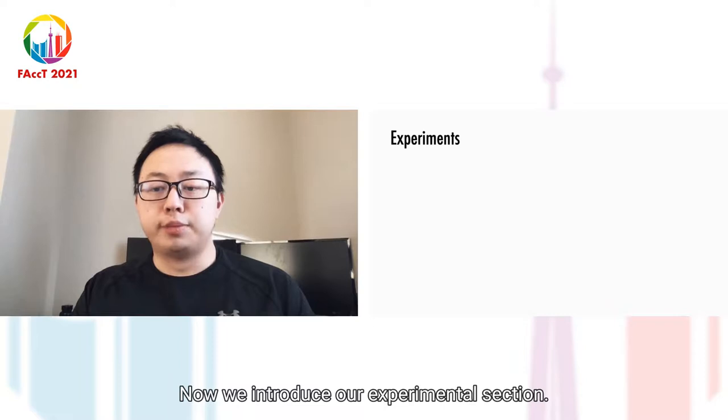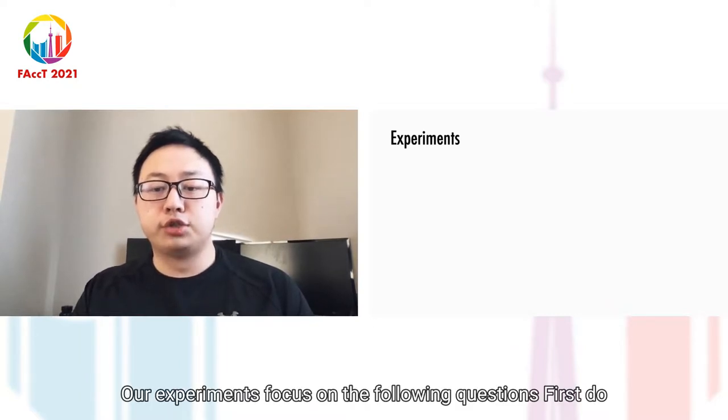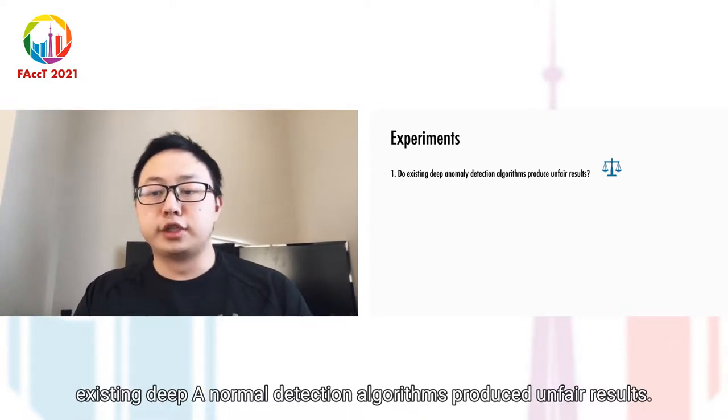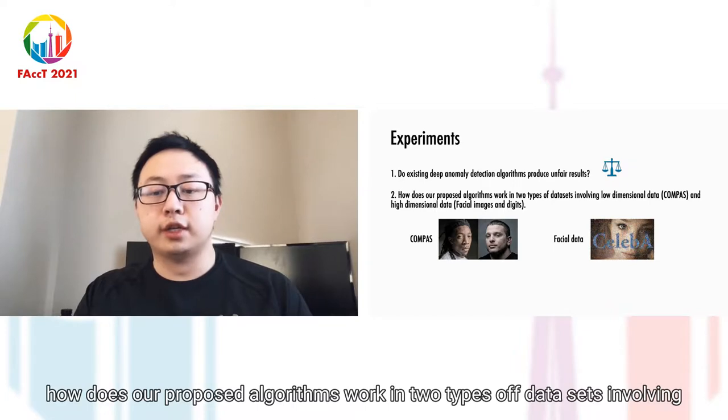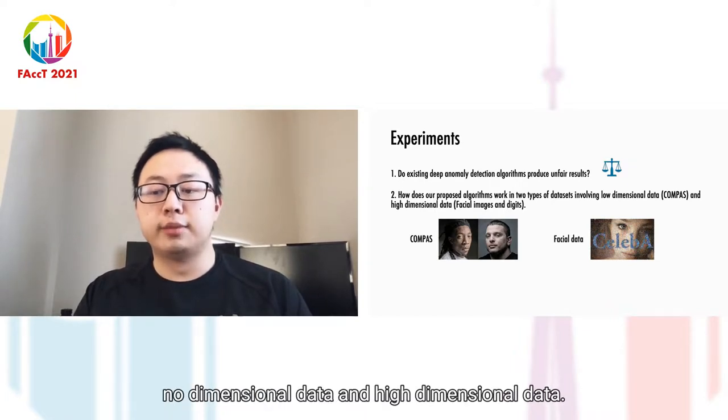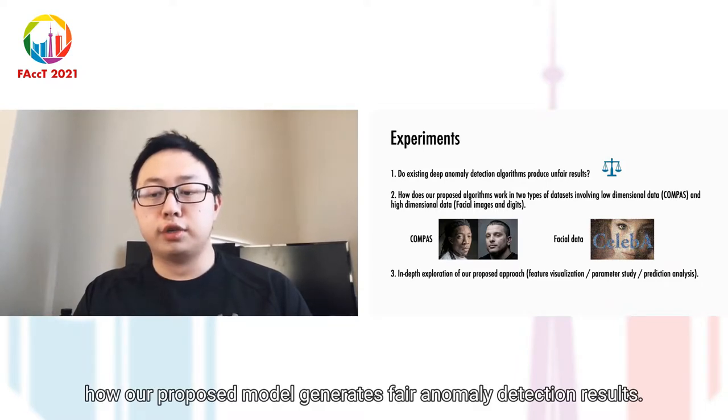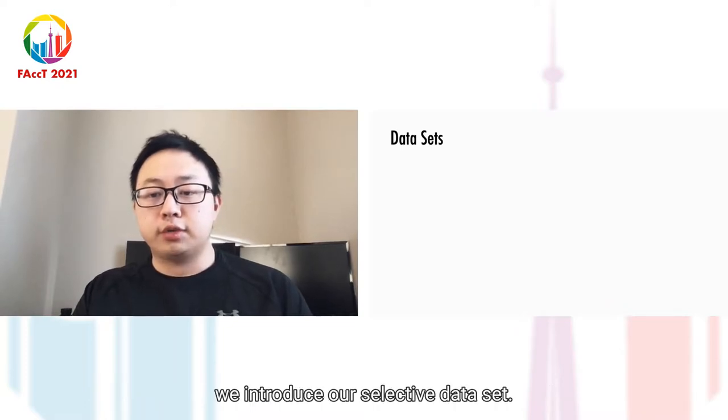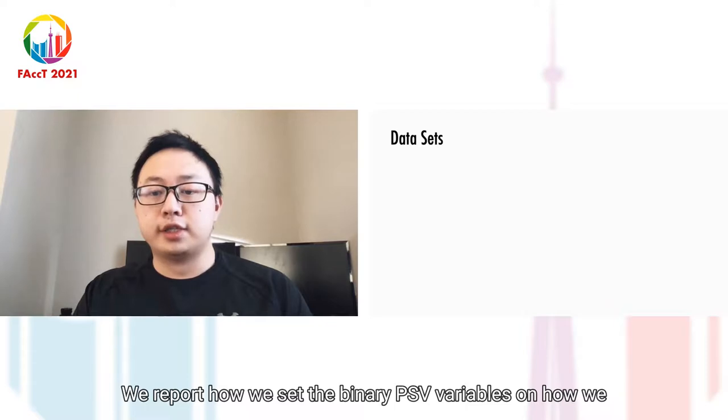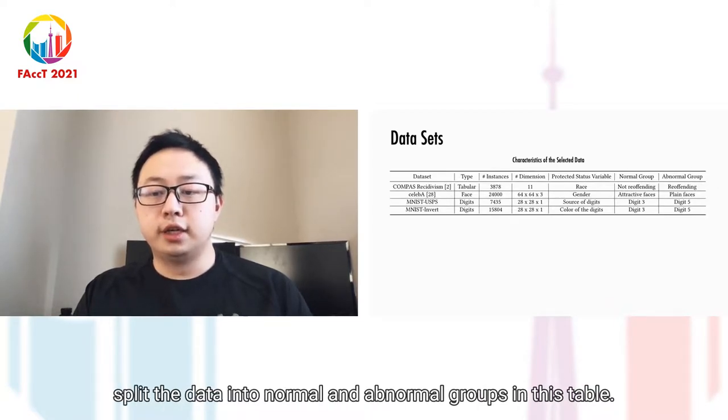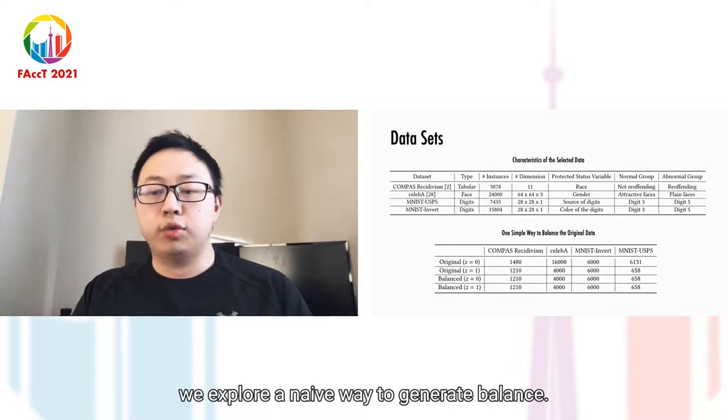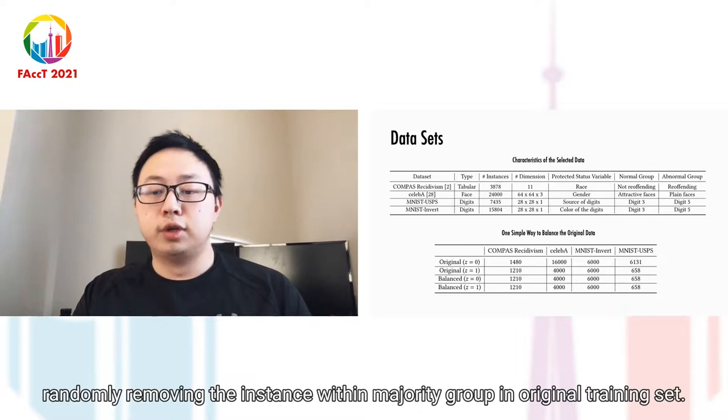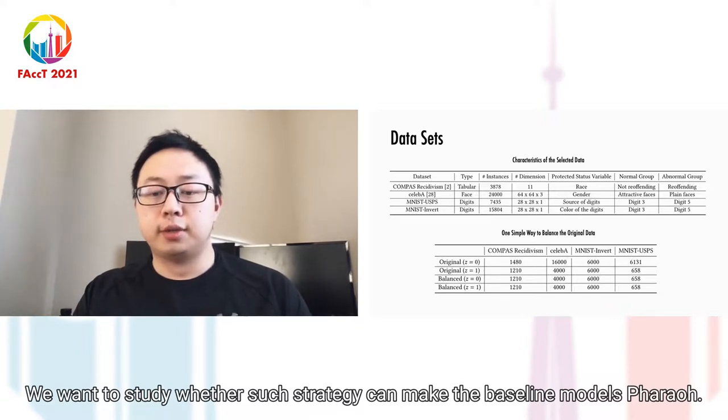Now we introduce our experimental section. Our experiments focus on three questions. First, do existing deep anomaly detection algorithms produce unfair results? Second, how does our proposed algorithm work on two types of datasets involving low-dimensional and high-dimensional data? Third, how does our proposed model generate fair anomaly detection results? We introduce our selected datasets, reporting how we set the binary PSV variables and how we split the data into normal and abnormal groups. Moreover, we explore a naive way to generate balanced training sets by randomly removing instances within the majority group to study whether such strategy can make baseline models fairer.